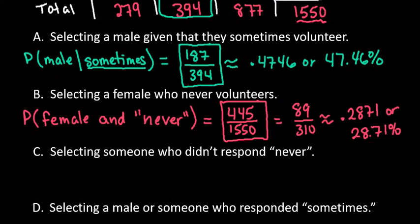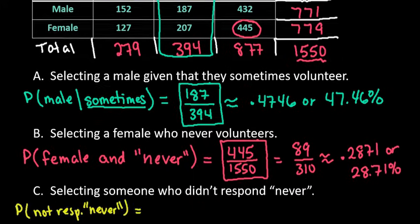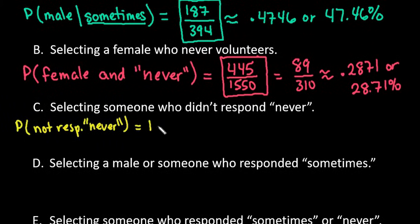For the next one we're going to use the complement rule. We're looking for the probability of not responding with never. For this one, the easiest way - and there's actually two ways that you could do this one - since there's only two other options, frequently or sometimes, those would be the two that you could use. So I could add the 279 plus the 394, or I could use the complement rule and say one minus the probability of responding never.